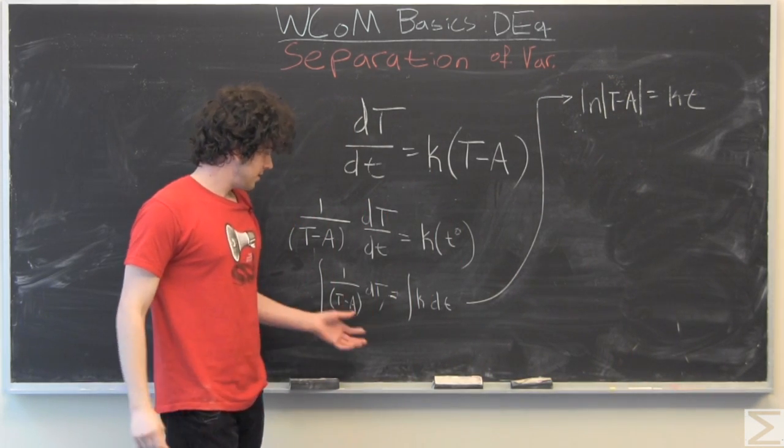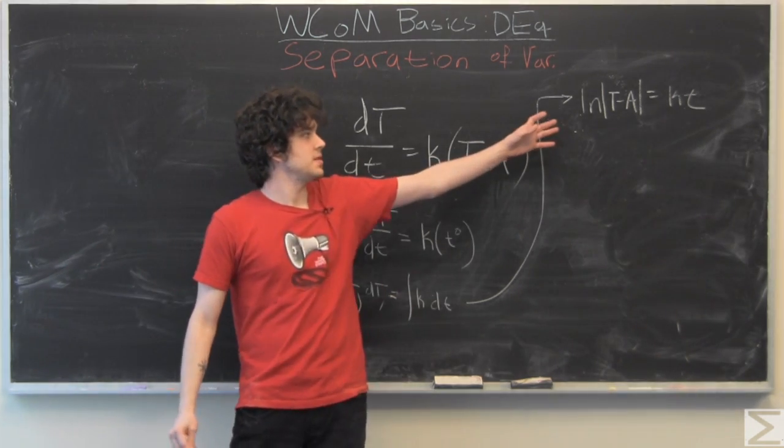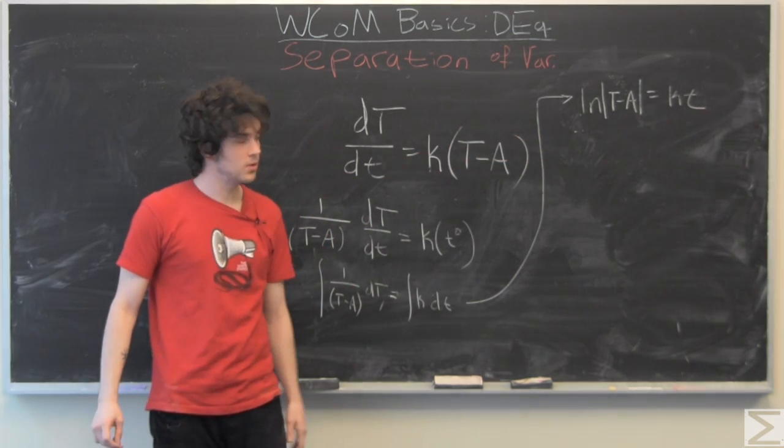So after we integrate it's just basic logarithm and power rule we get ln of T minus A is equal to KT.